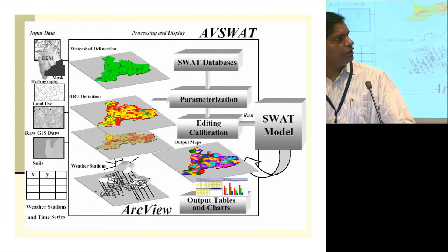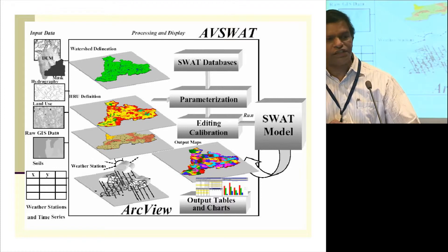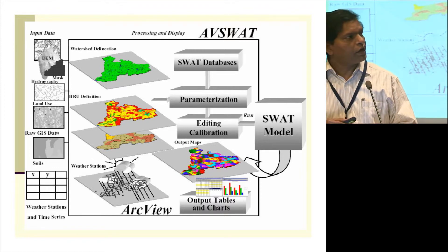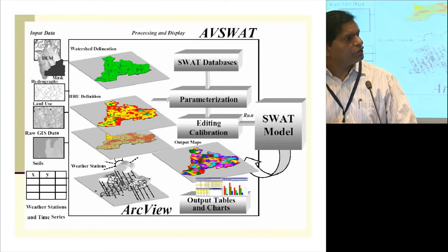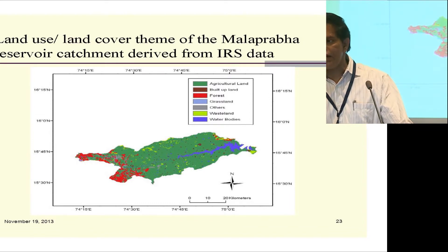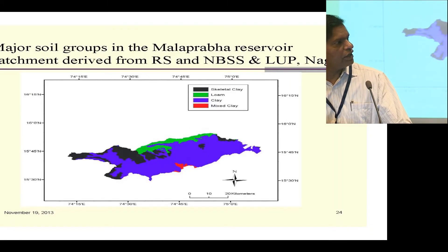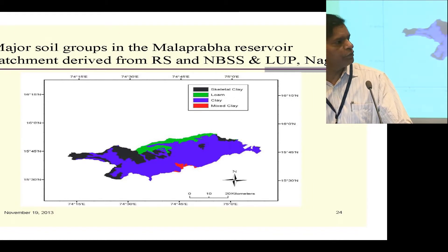The inputs to the SWAT model include: elevation data from a digital elevation model for drainage pattern, hydrography, and projected climate variables such as rainfall, relative humidity, and wind speed — all processed through ArcGIS (ARCSWAT interface). Land use and land cover information was provided from IRS LISS3 data, and soil type information was obtained from remote sensing corroborated with NBSS and LUP Nagpur maps.